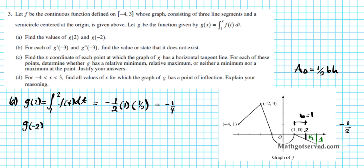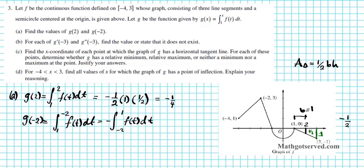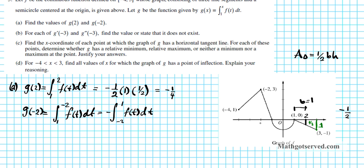Next we have to find g(-2). g(-2) is the integral from 1 to negative 2 of f(t) dt. Let's reverse the order to get negative times the integral from negative 2 to 1 of f(t) dt, using the order property of integrals. This expression means the area between the function and the x-axis from negative 2 all the way to 1. We can see that as a combination of two geometric shapes: a triangle and a semi-circle. So we're going to use two formulas from geometry to figure this out.